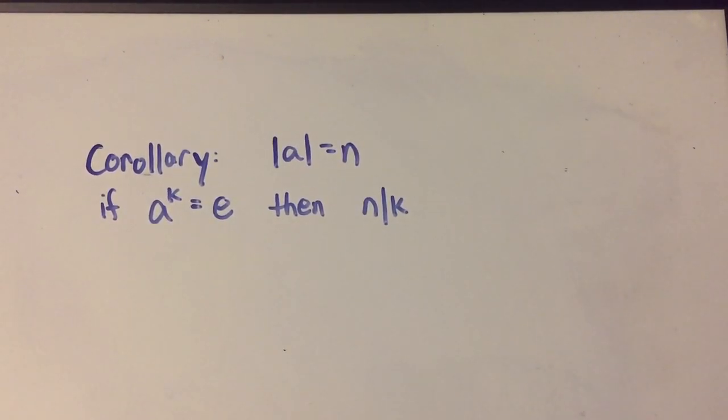Hi everyone, I have a corollary to prove for you in abstract algebra. This corollary is to a theorem that a to the i is equal to a to the j if and only if n divides i minus j.